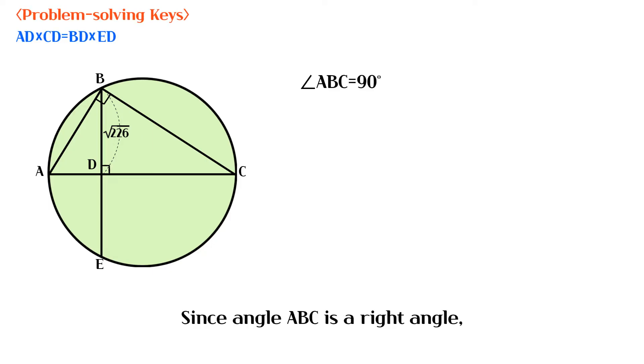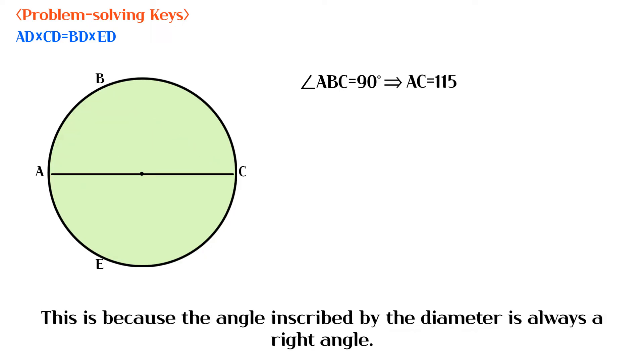Since angle ABC is a right angle, segment AC is the diameter of the circle. This is because the angle inscribed by the diameter is always a right angle.